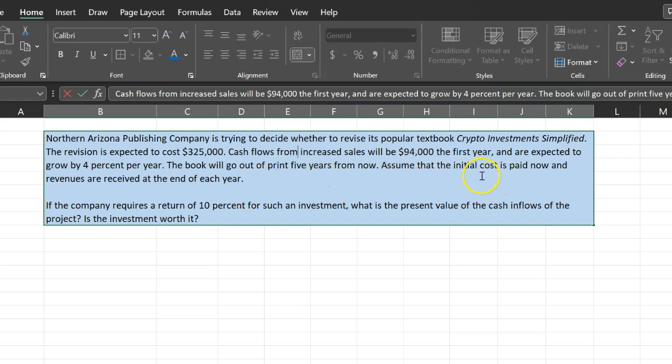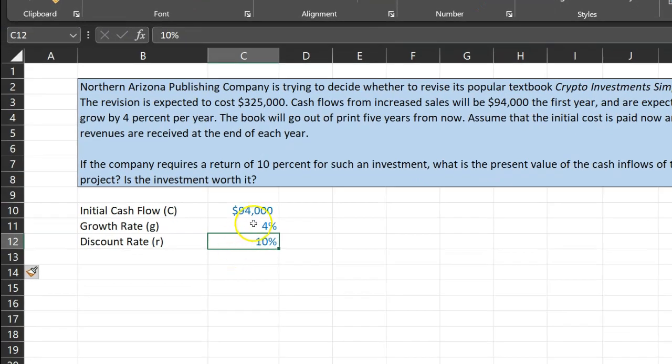Assume the initial cost is paid now and revenues are received at the end of the year. If the company requires a rate of return of 10%, what is the present value of the cash inflows of the project? And is this investment worth it? So the first thing that I'm doing here is jotting down all the information that we are provided.